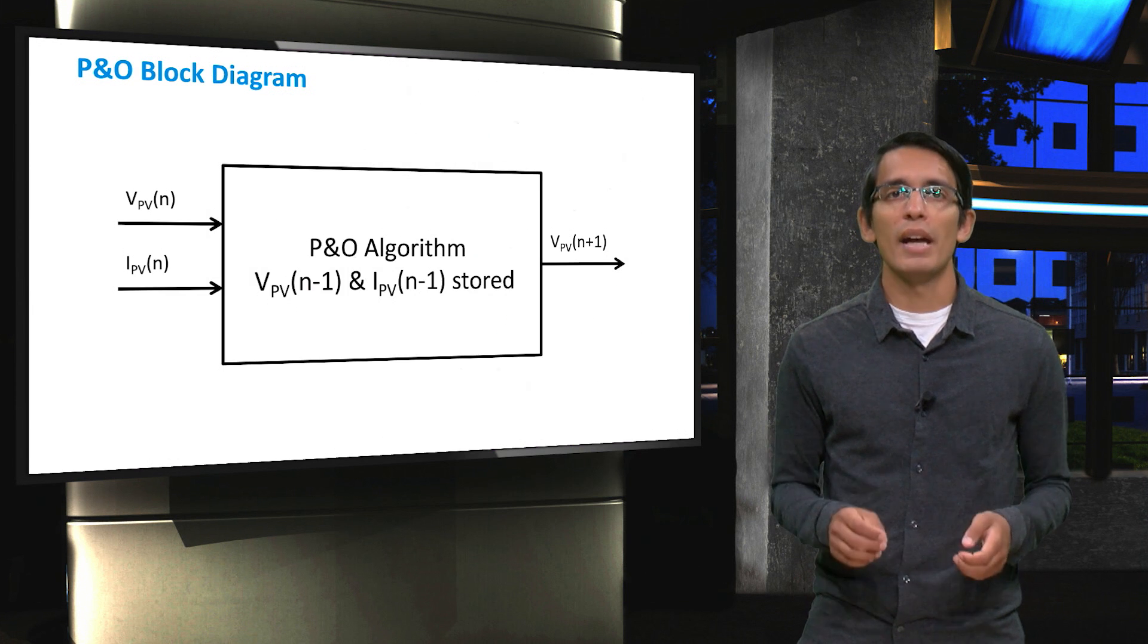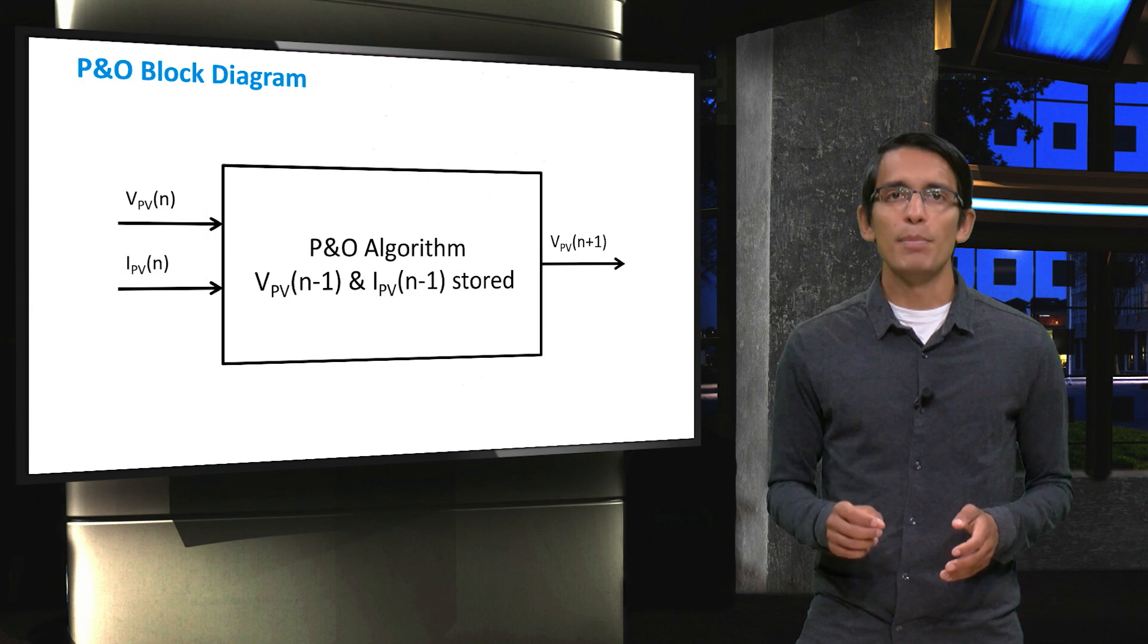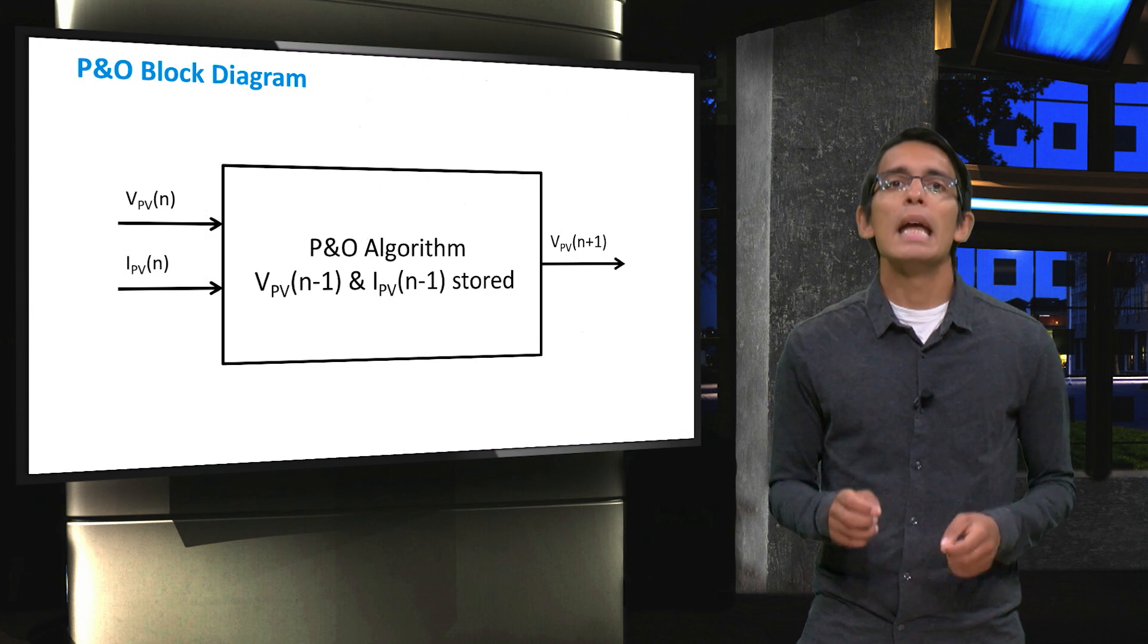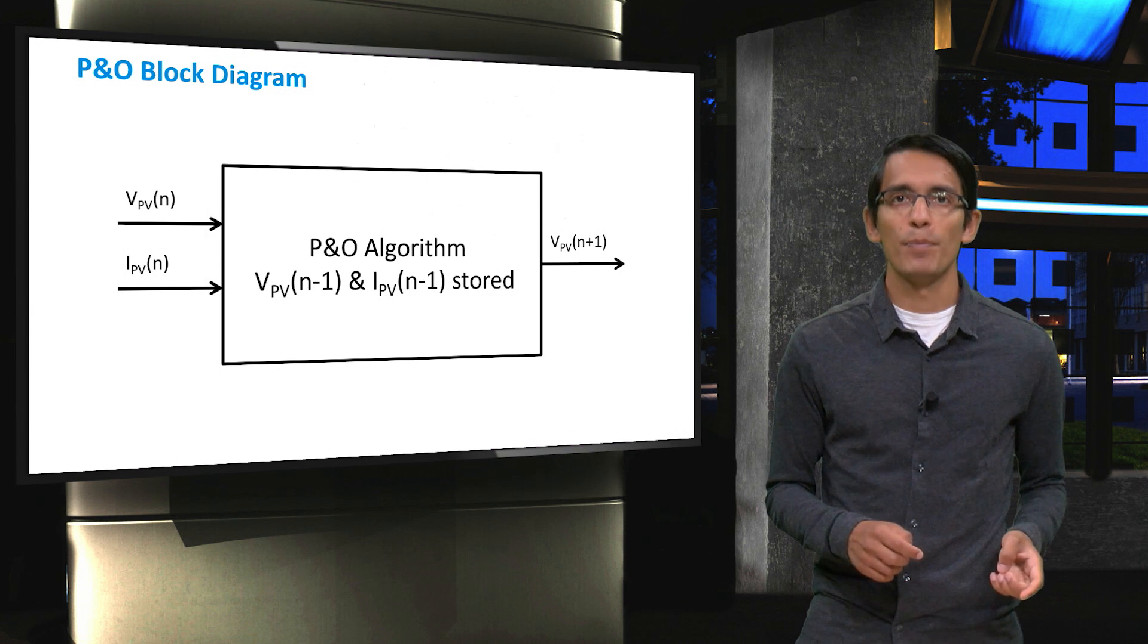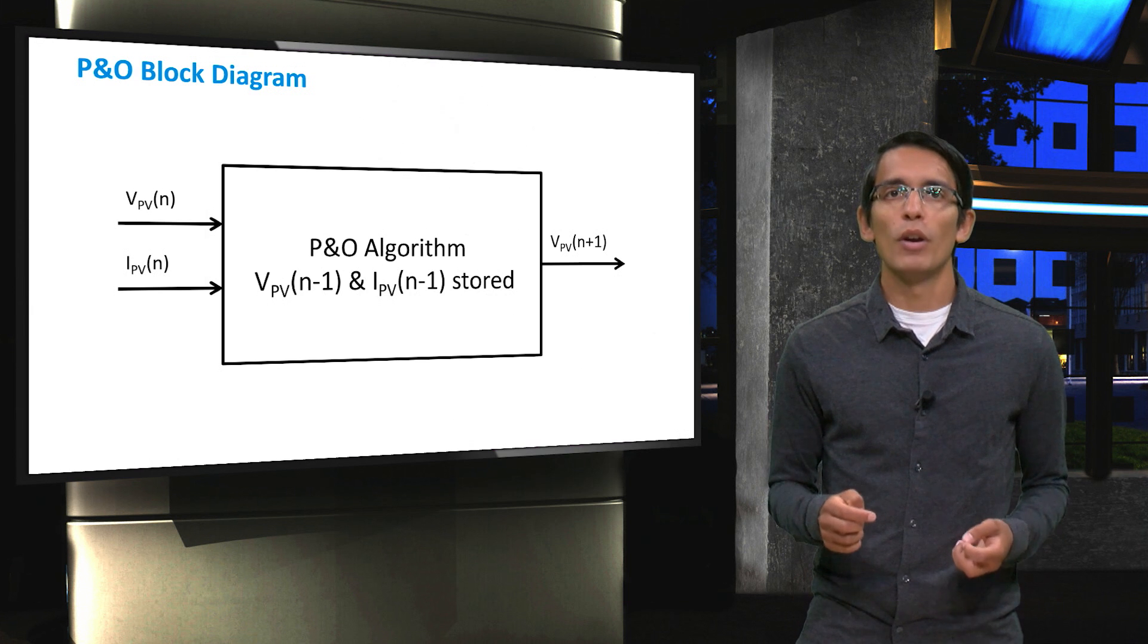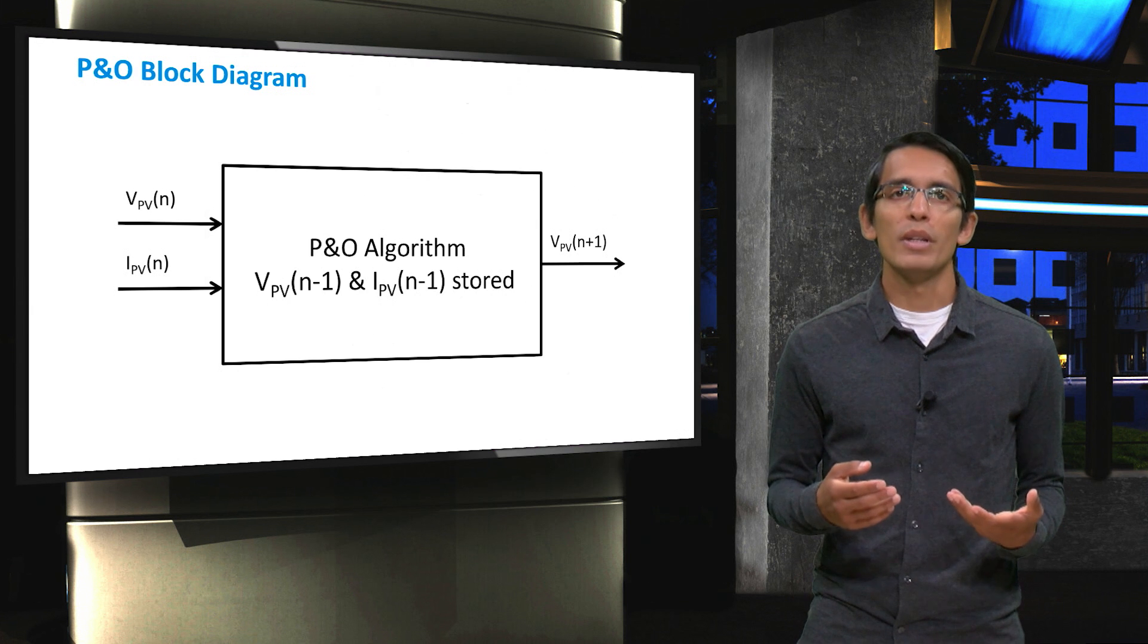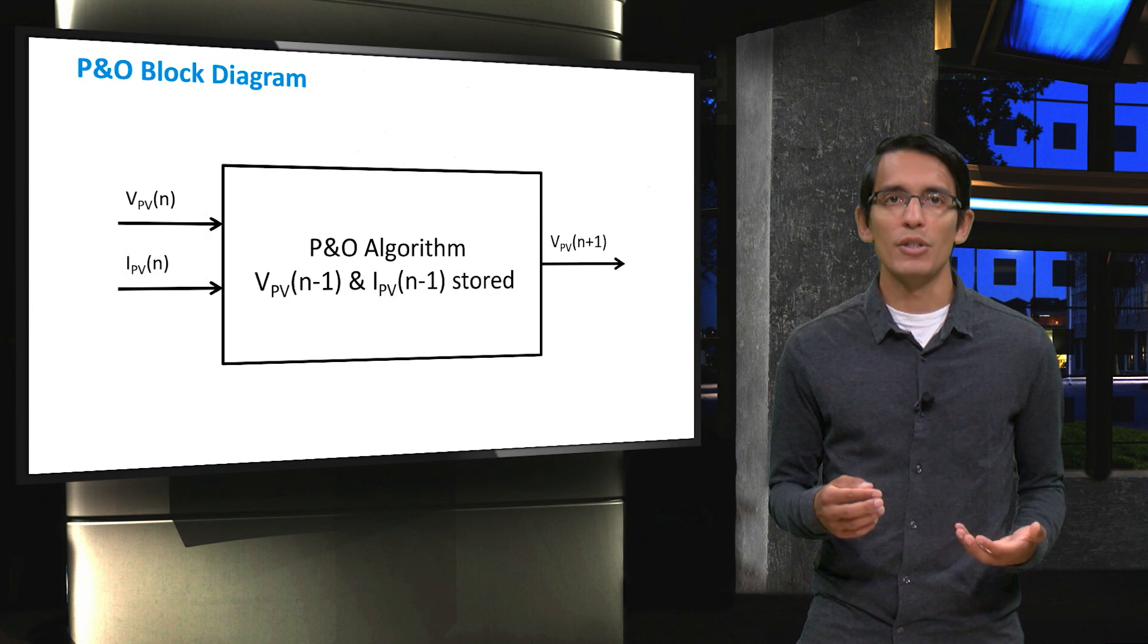Here you can see the block diagram used for the perturb and observe technique. As inputs, it needs the instantaneous voltage and current of the solar cell. It also needs to store the voltage and current before the previous perturbation. Using that, it can calculate whether the current perturbation was positive or negative, and therefore it can decide which direction the next perturbation should be. The logic can also consist of other, more advanced aspects, such as the size of the perturbations depending on some other data stored in memory.